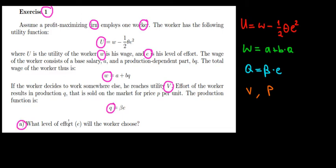In part A: What is the level of effort that the worker will choose? When it comes to effort level, the worker would maximize his utility because the company doesn't force the worker to have a certain effort, meaning we look from the worker's perspective.